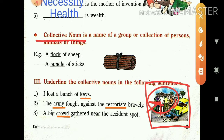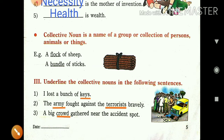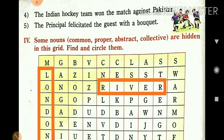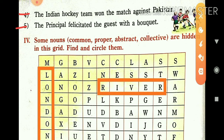So, a collection of persons, collection of animals, or collection of things — it is called a collective noun. I have solved sentences one, two, and three for you. You should solve the fourth and fifth sentences as homework. Now let us move to the next exercise, number four.